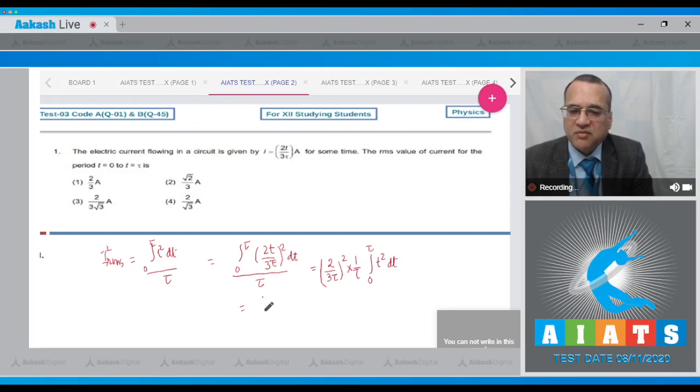Now integrate this. It becomes 4 by 9 tau squared, and this is tau cubed. Your integration t squared is t cubed by 3, and the limits are from 0 to tau. Therefore, this becomes 4 by 9 tau cubed into tau cubed divided by 3. This becomes 4 by 27, and this cancels with this.